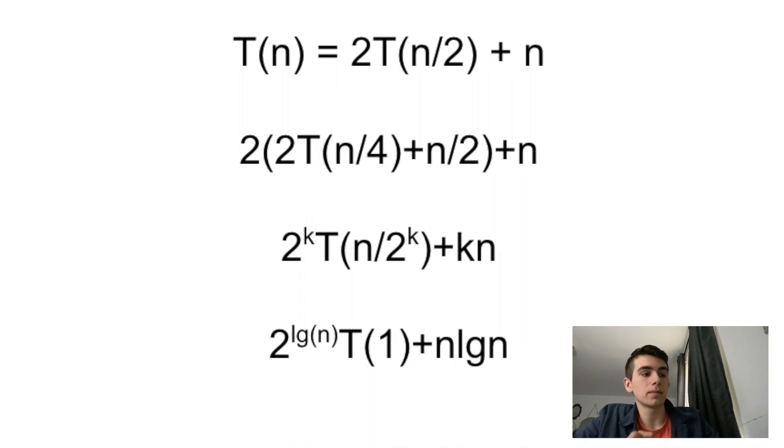And then what you do is you say, okay, what k will make the argument of T one? Because that's my base case. And it turns out that n over 2^k will become one when k is log n. So then we plug in k as log n. This is kind of genius, isn't it? When I first realized this, when I first learned this, I was like, wow.